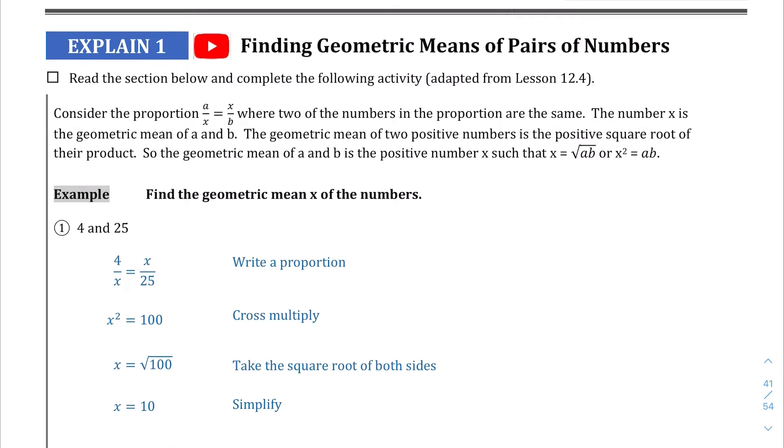They jump into this idea of geometric mean, where you set up a proportion and X is the geometric mean of A and B. And they don't really give you much explanation why they're setting this up. They're just kind of throwing this at you and imagining that you're going to understand what it means.